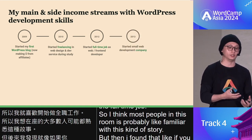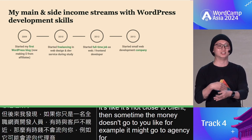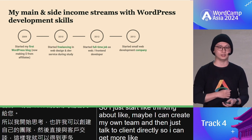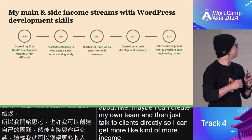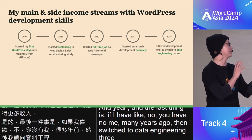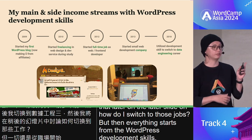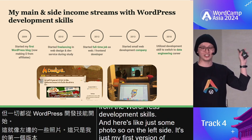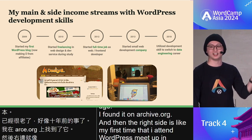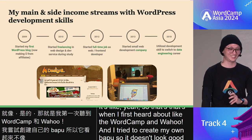I found that working as a full-time web developer isn't always close to the client — money might go 50 percent to the agency and only 10 percent to you. So I started thinking about building my own team and talking directly to clients for more income. Later I switched to the data engineering stream — I'll talk about that shortly. But everything started from WordPress development skills. On the left here is the first version of my blog from about 10 years ago, found on archive.org, and on the right is my first WordPress meetup in Bangkok — that's when I first heard about WordCamp.